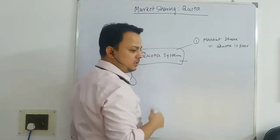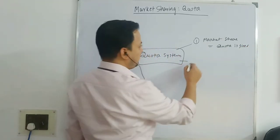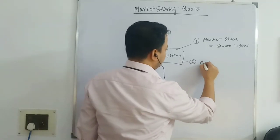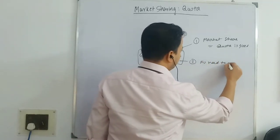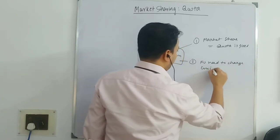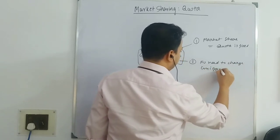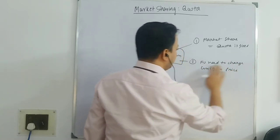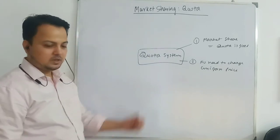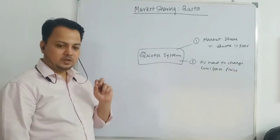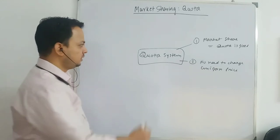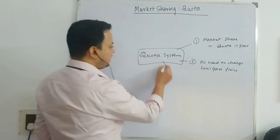Under the quota system, there is no need to charge a uniform price. It is not necessary that firms should charge a uniform price. But in non-price competition, they should charge a uniform price.